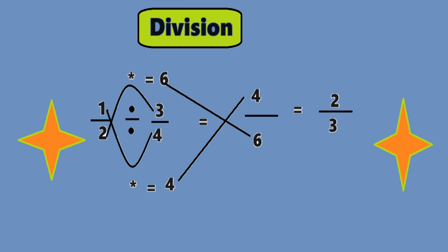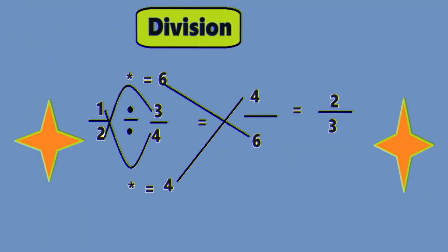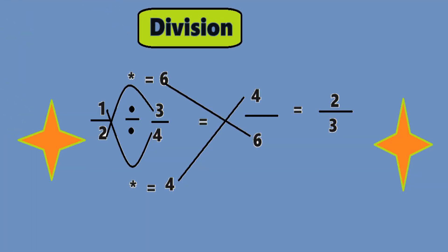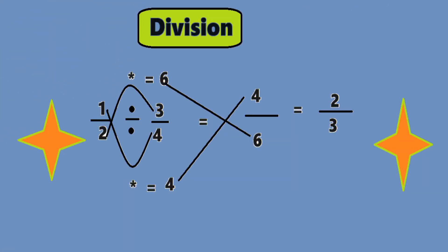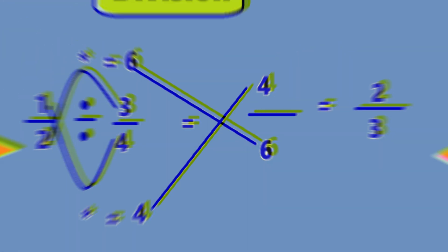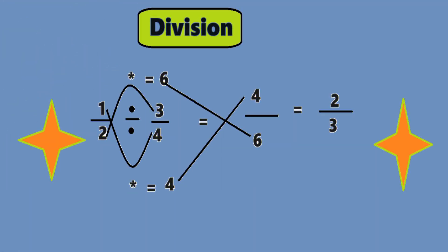Now let us take fraction division. First example: 1 by 2 divided by 3 by 4. Now cross multiply: 1 into 4, which is equal to 4 — that becomes the numerator. And 3 into 2 which will give us 6 — that becomes the denominator. That is 4 divided by 6, and that gives us the resultant 2 divided by 3. That's it.